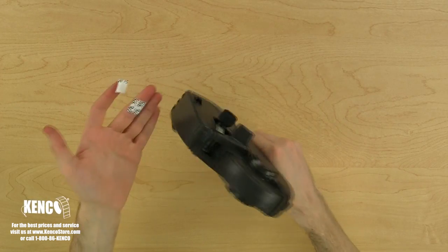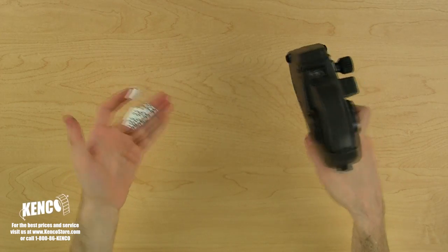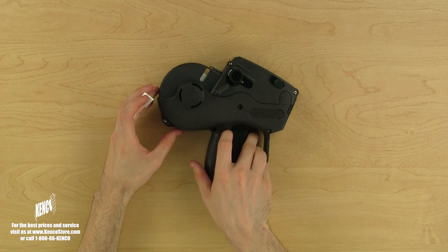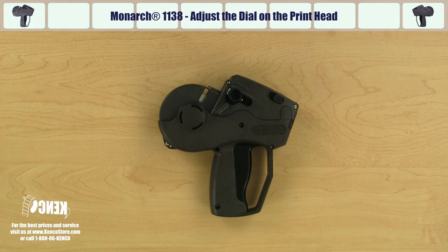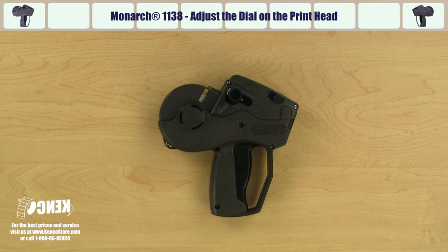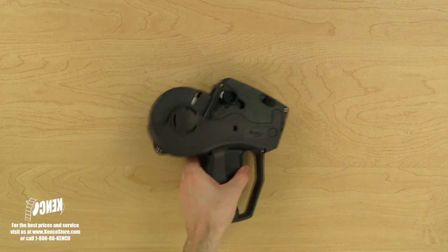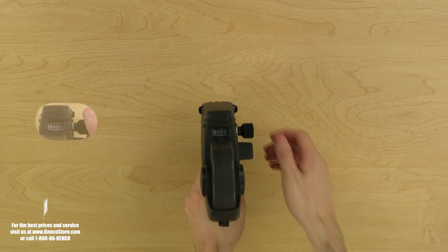Now that the gun is properly loaded, we'll learn how to adjust the price. Now I'm going to show you how to adjust the dial on the printhead. With the top part of the gun facing you, we'll use our left hand to hold the gun and our right hand to grab the adjustment dial.